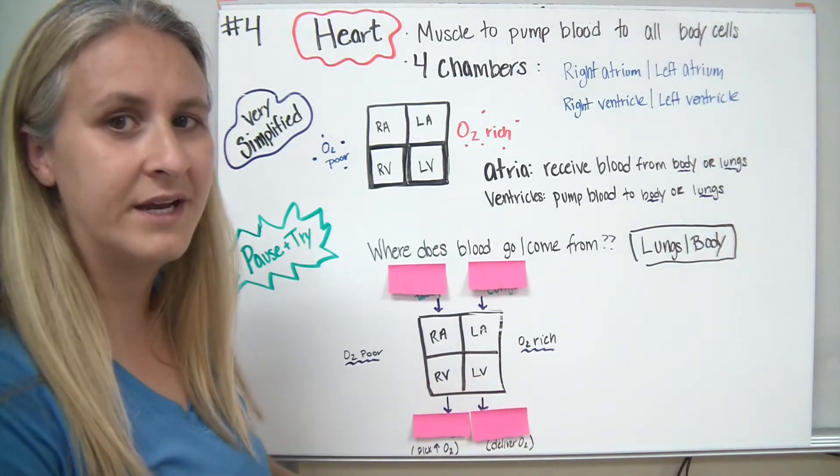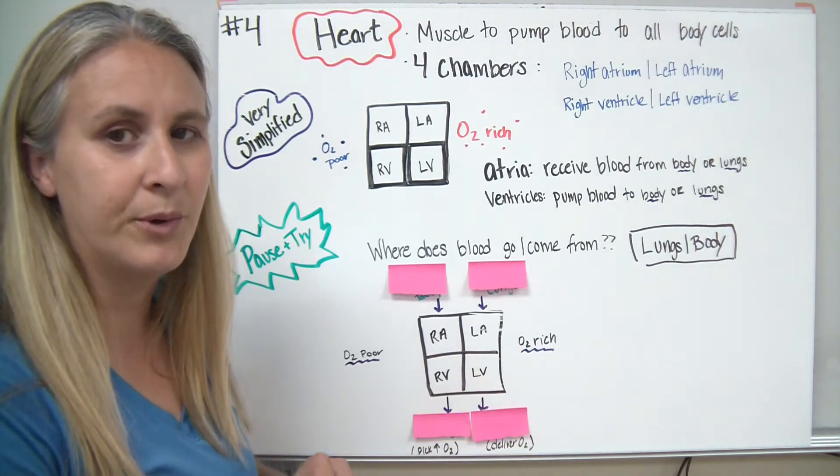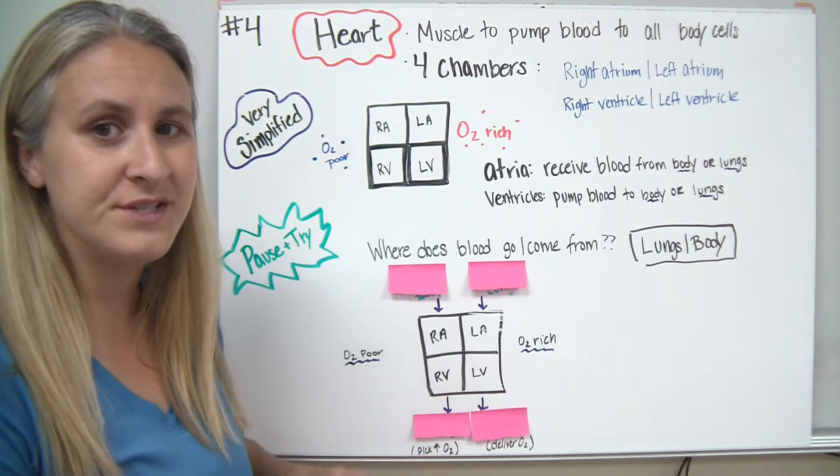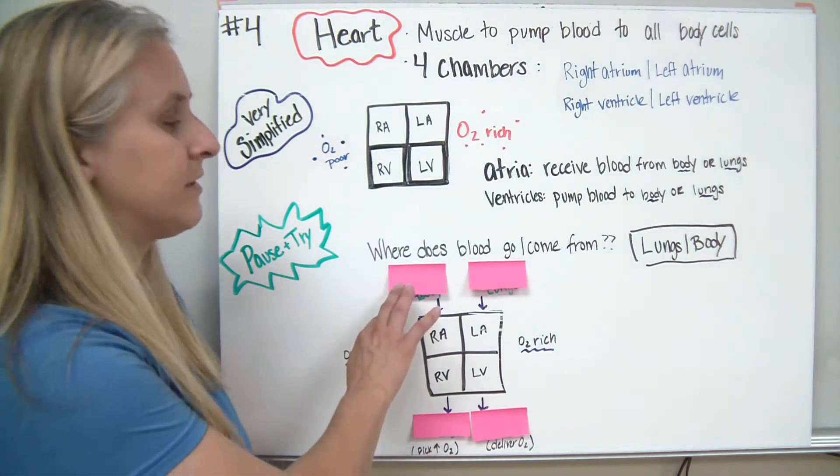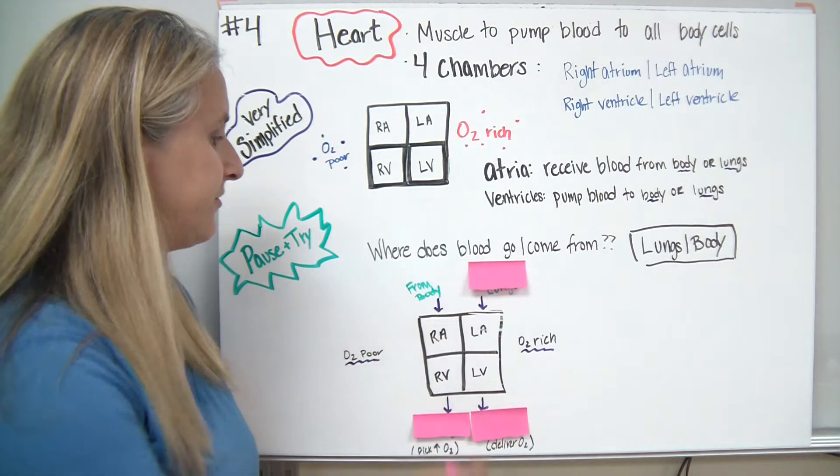Note that we've labeled one side oxygen-rich and one side oxygen-poor. So I want you to pause and try to label where things go and where they come from. Now that you've tried, let's reveal.